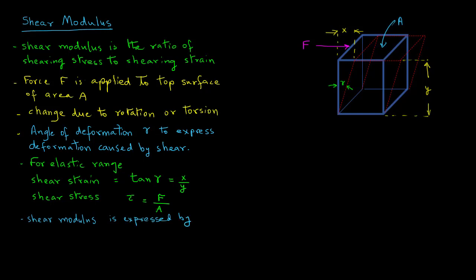So shear modulus is expressed by the symbol G where G equals shear stress over shear strain and that equals tau for shear stress divided by tangent gamma for shear strain. For a small change in the angle gamma, tangent gamma is approximately equal to gamma. So we can express G, the shear modulus, as tau over gamma.